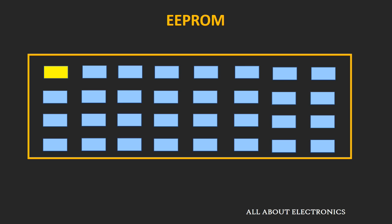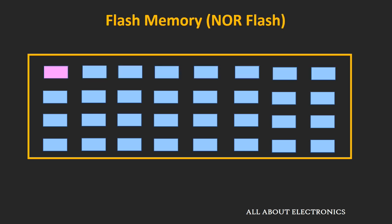After EEPROM came the flash memory. This flash memory is a subset of EEPROM — it is one type of EEPROM. In the case of flash memory, unlike EEPROM, we can erase an entire block of data at the same time. There are two types of flash memory: NAND flash and NOR flash. In NAND flash, reading and writing are also performed in blocks. But in NOR flash, it is possible to read or write one particular word or byte at a time, while the erase operation is performed on an entire block. This NOR flash is used as program memory inside the microcontroller.